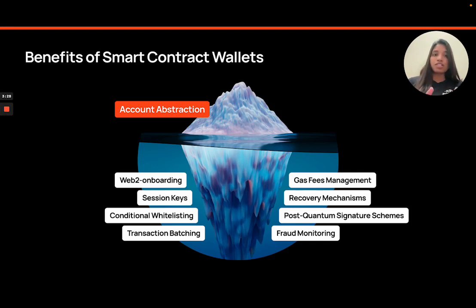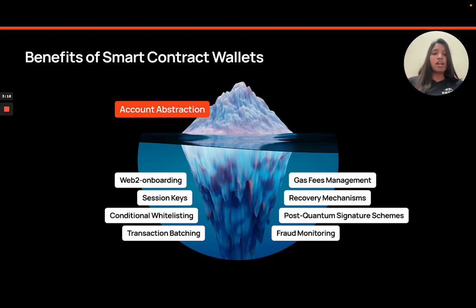Biconomy SDK follows the EIP-4337 proposal to have programmable wallets. It is a Web3 developer suite that can help developers give Web2-like experiences for their dApps through a smart contract wallet approach. The addresses of these smart contract wallet accounts would be counterfactual in nature.